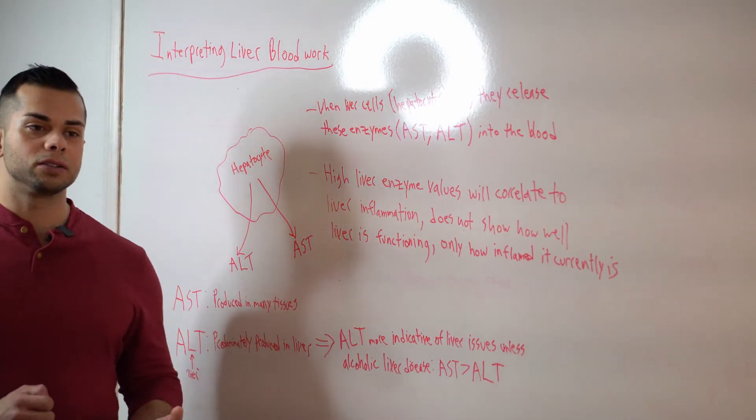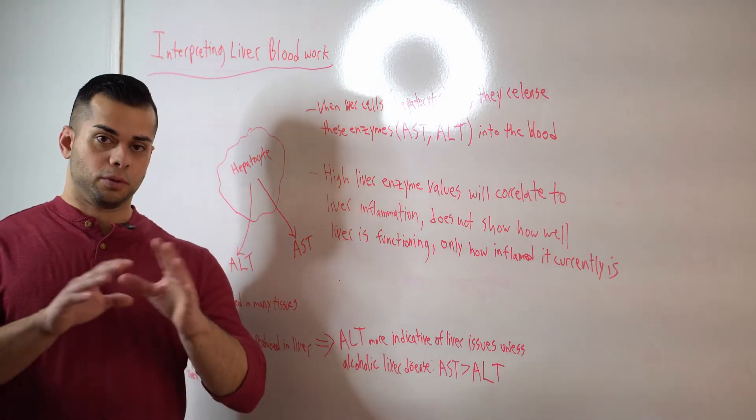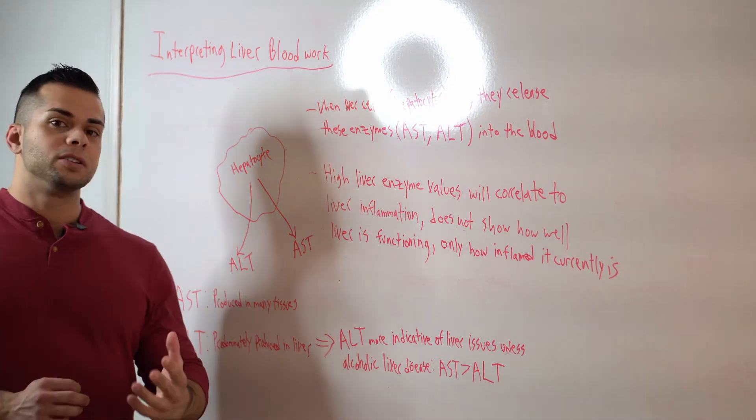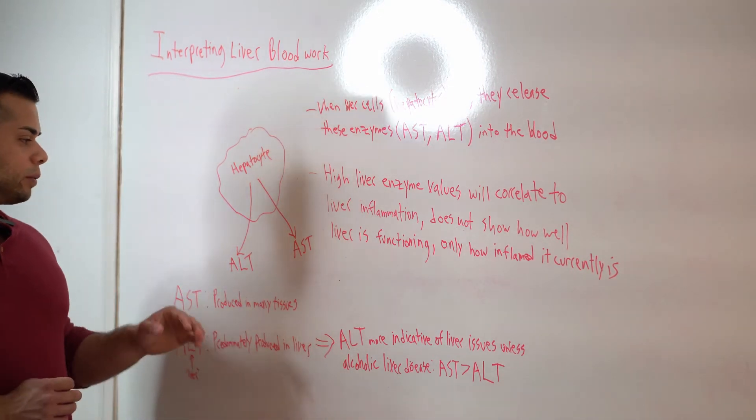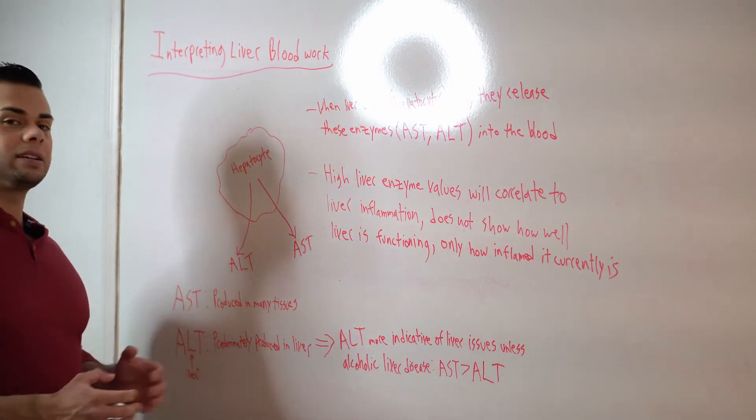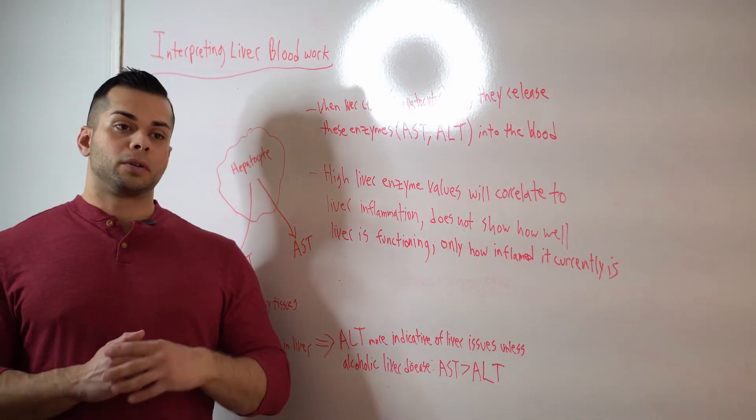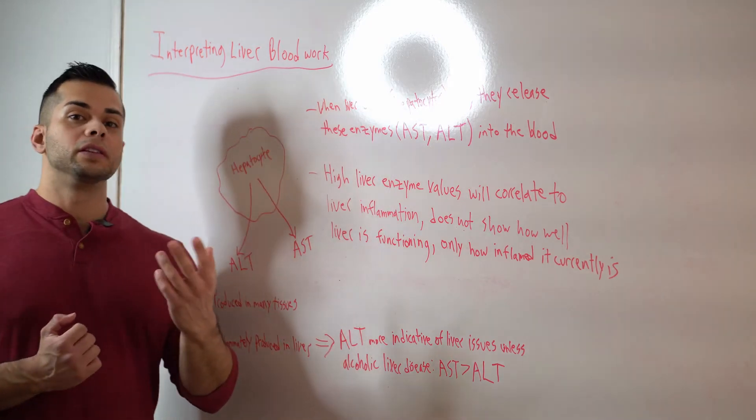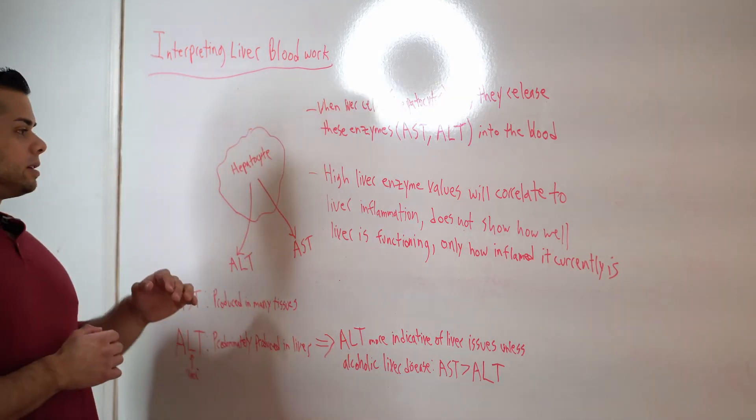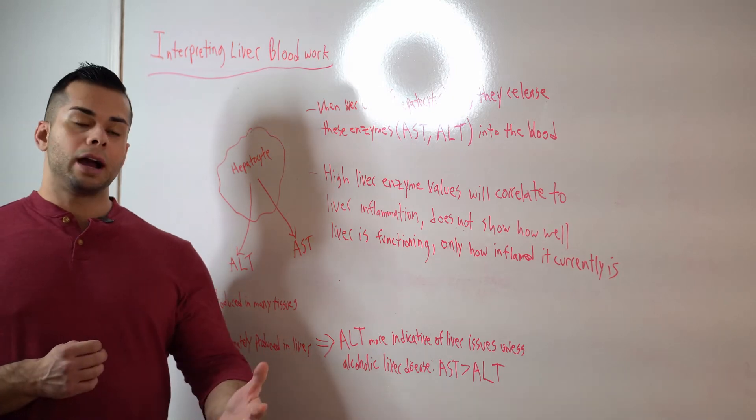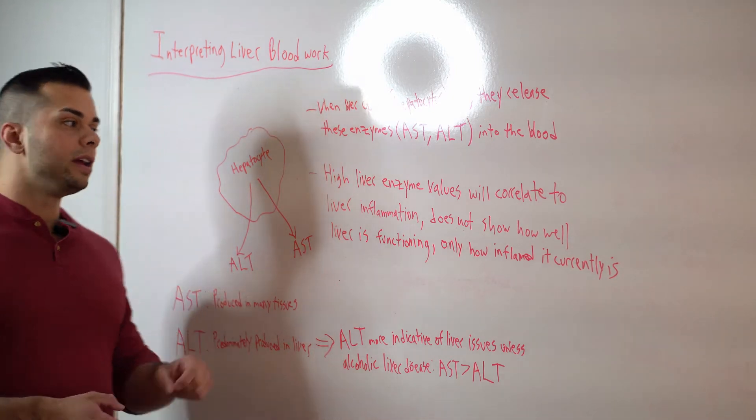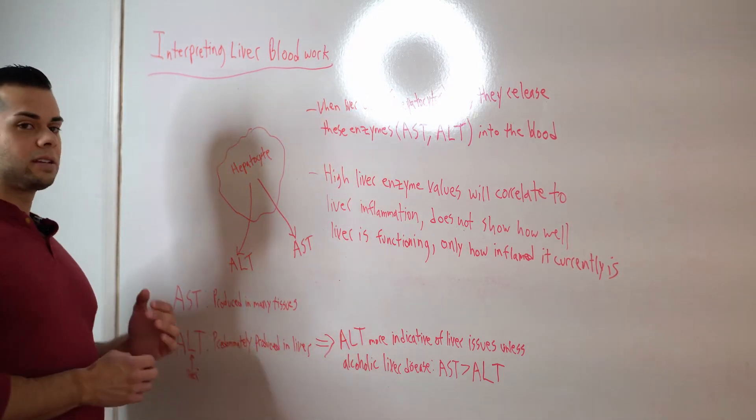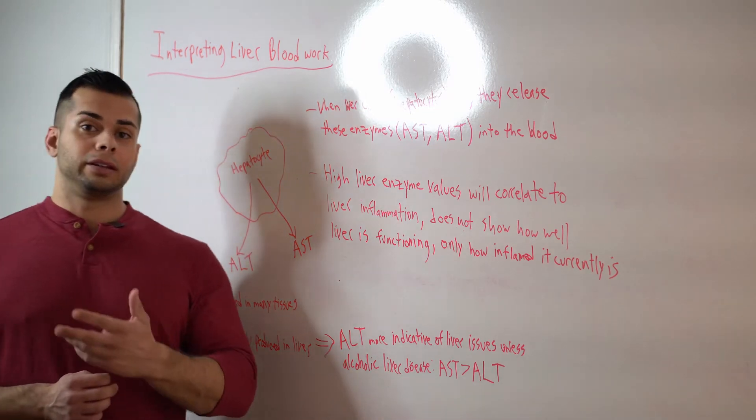It's only when these cells are lysed, they're broken open by damage to the liver, is whenever we start to see these ALT and AST enzymes coming out into the blood, which is how we get a reading on them. So when the liver is damaged, we start to see these hepatocytes die.